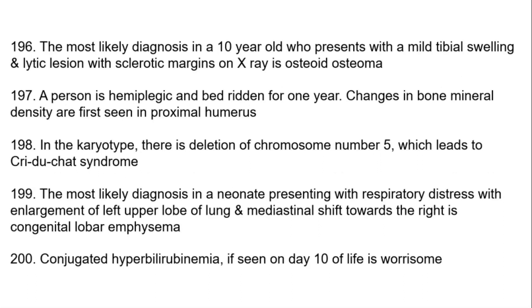The most likely diagnosis in a 10-year-old presenting with mid-tibial swelling and a lytic lesion with sclerotic margins on X-ray is osteoid osteoma. In a hemiplegic bedridden patient for one year, changes in bone mineral density are first seen in the proximal humerus. In the karyotype there is deletion of chromosome number 5 which leads to Cri-du-chat syndrome.